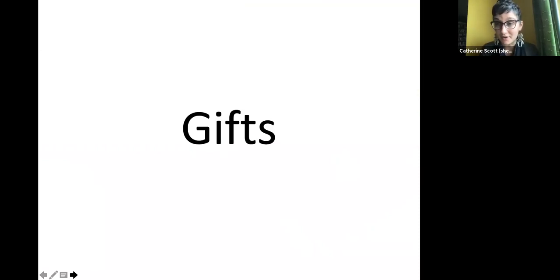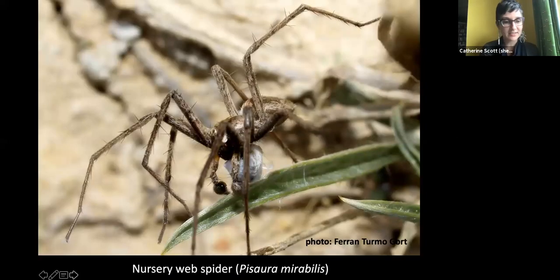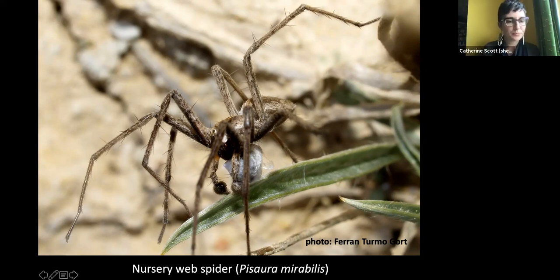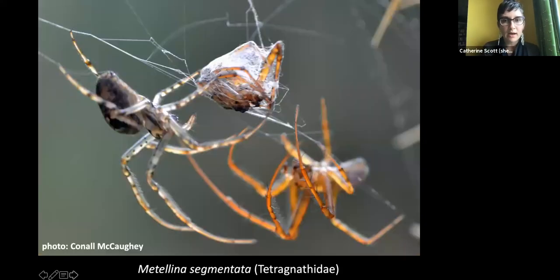Spiders also give each other gifts during mating. Pisaura mirabilis males capture a fly, wrap it in silk, offer it to the female, and mate with her while she's busy eating the gift. Long-jawed orb weaver males similarly present a gift to the female to distract her while they mate — if she's busy eating prey, she's less likely to eat him.